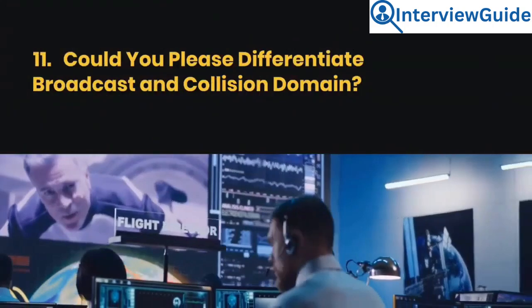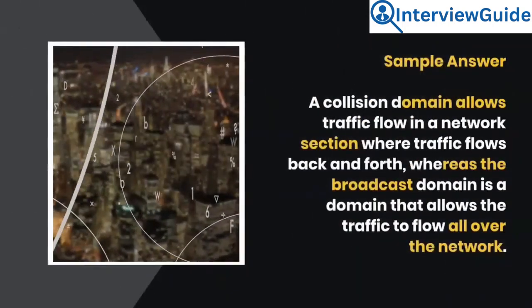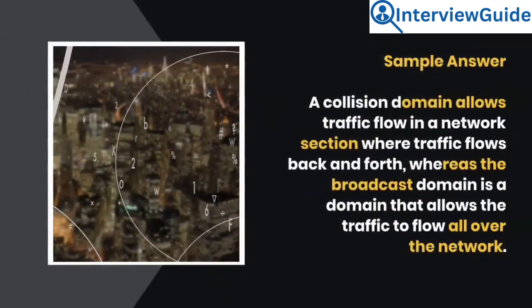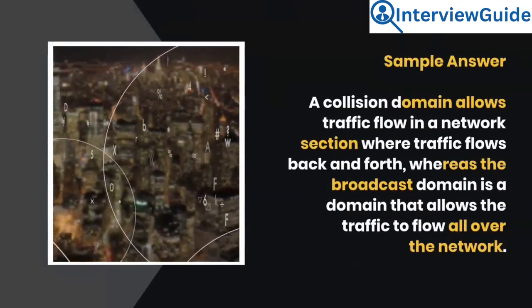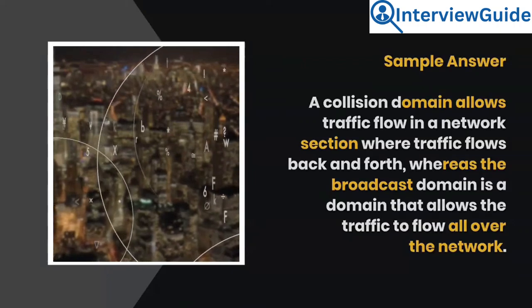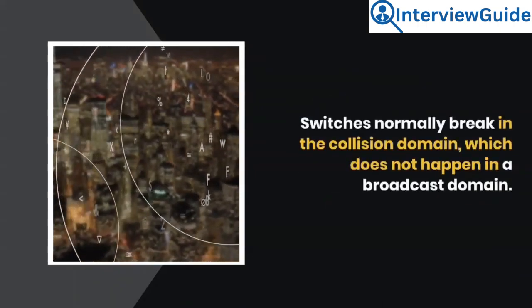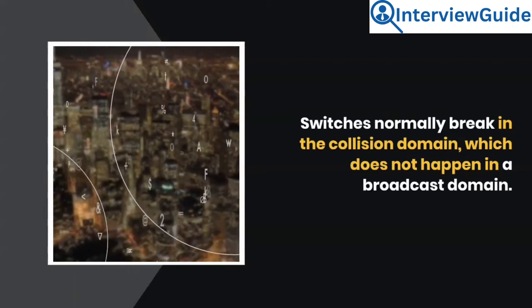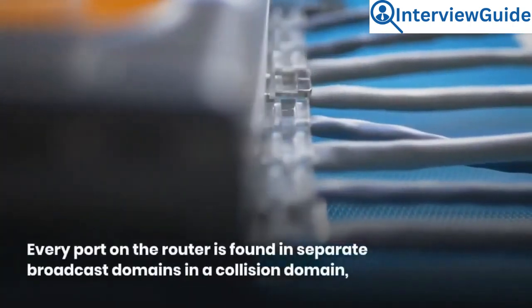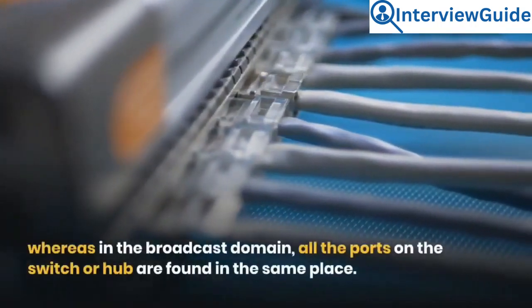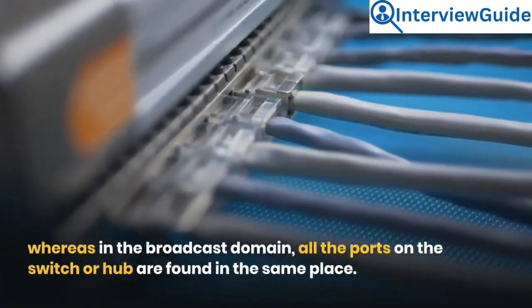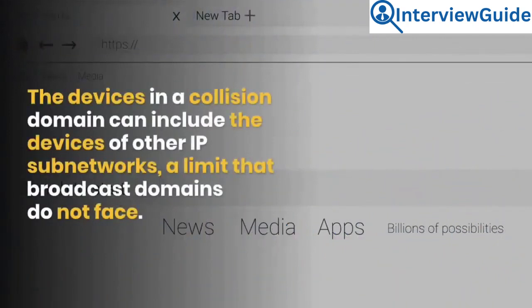Question 11: Could you please differentiate broadcast and collision domain? A collision domain allows traffic flow in a network section where traffic flows back and forth, whereas the broadcast domain is a domain that allows traffic to flow all over the network. Switches normally break up the collision domain, which does not happen in a broadcast domain. Every port on the router is found in separate broadcast domains in a collision domain, whereas in the broadcast domain, all ports on the switch or hub are found in the same place.